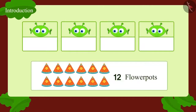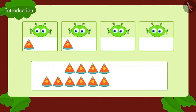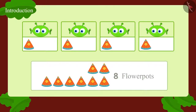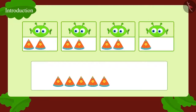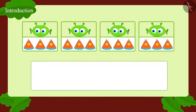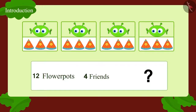First, we will give one flower pot to each friend. How many flower pots are left? Eight. Now we will continue giving one flower pot each to the four friends till all the flower pots are over. In this way, twelve flower pots have been divided among four friends. How many flower pots did each friend get? Absolutely right — three flower pots!